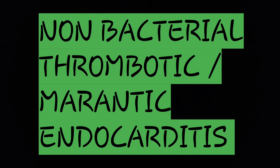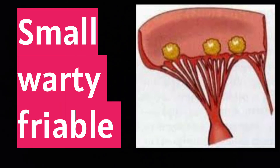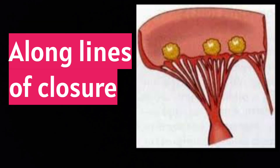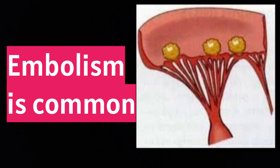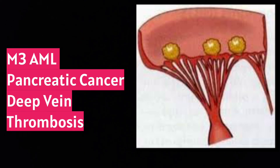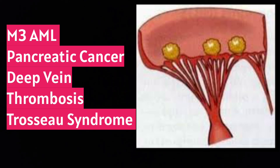Fourthly, non-bacterial thrombotic endocarditis. Vegetations are small, friable, and warty, present along the line of closure. They are sterile. Embolism is very common and is seen in cancers like M3 AML, pancreatic cancer, deep vein thrombosis, and Trousseau syndrome. Thank you friends.